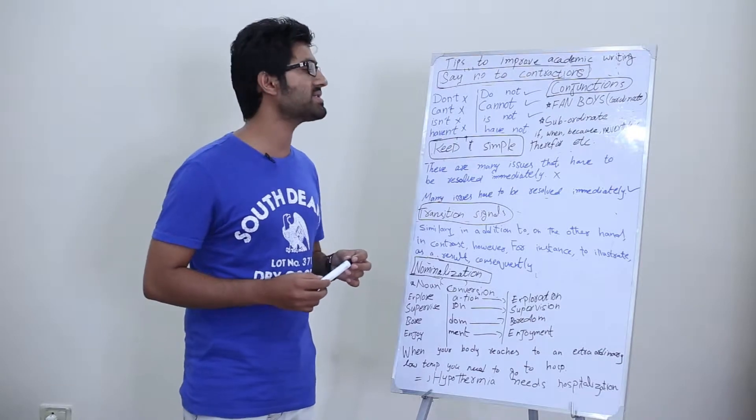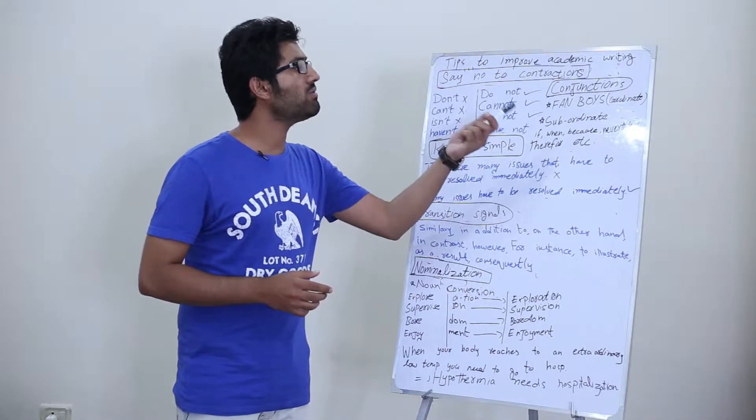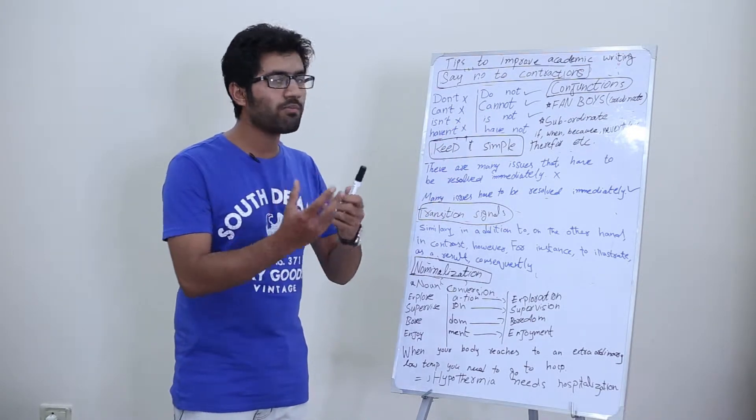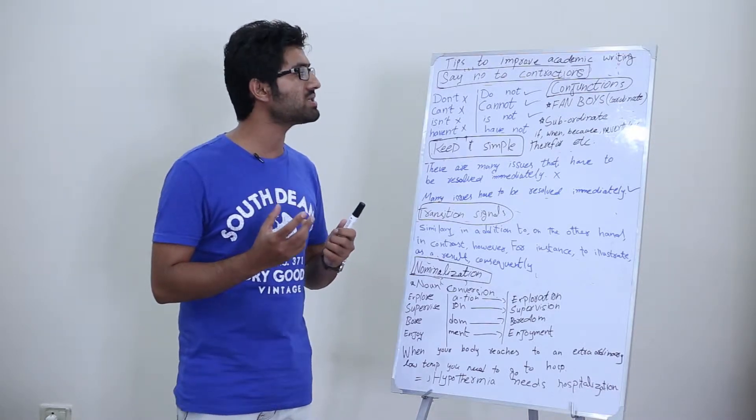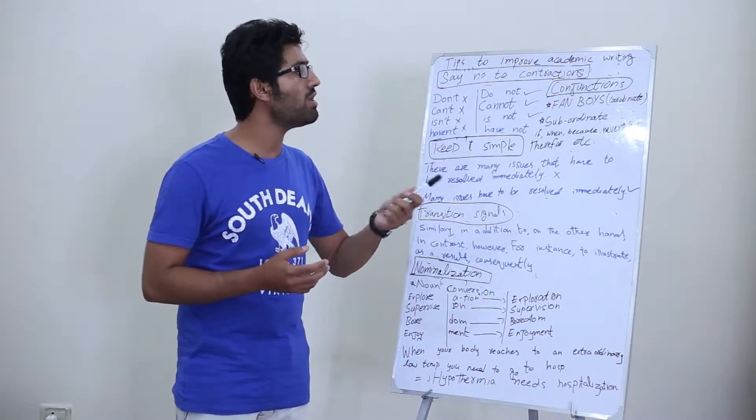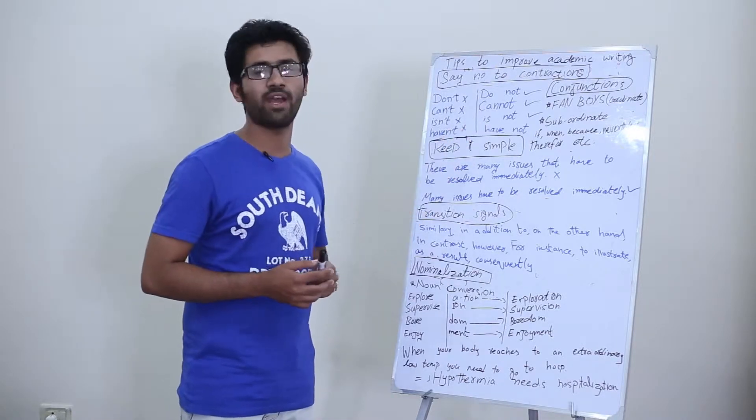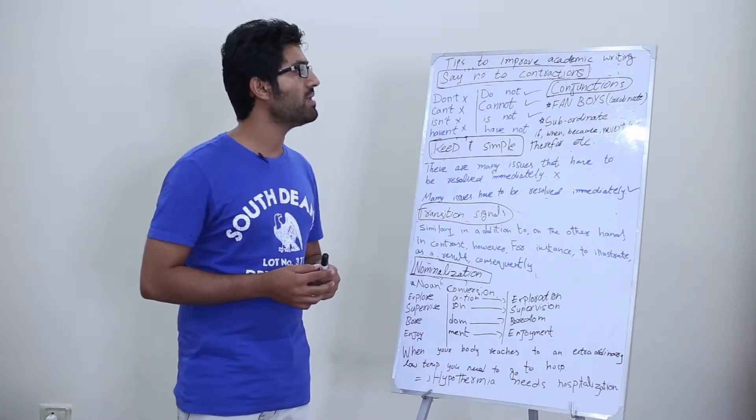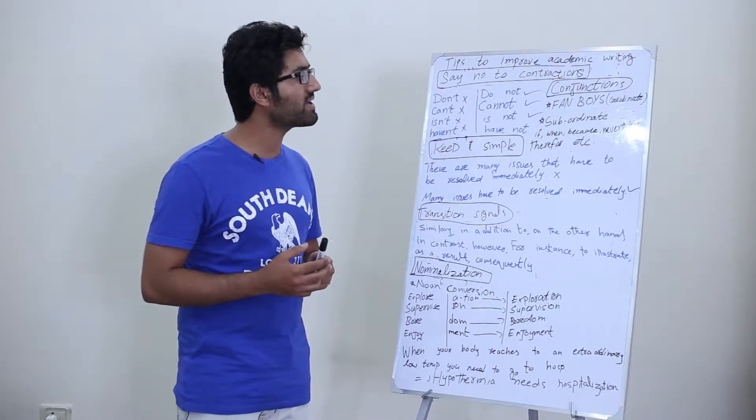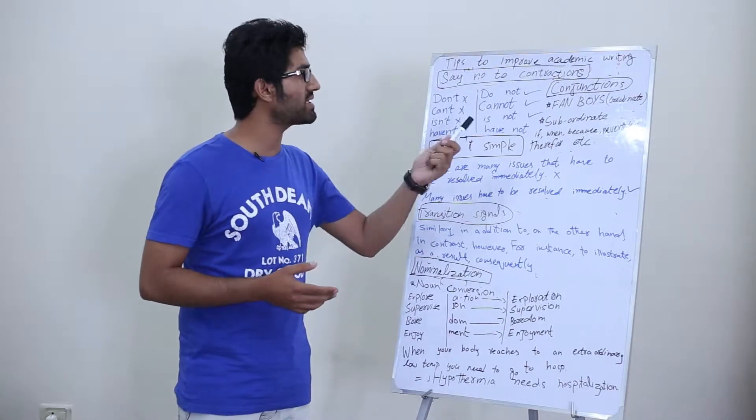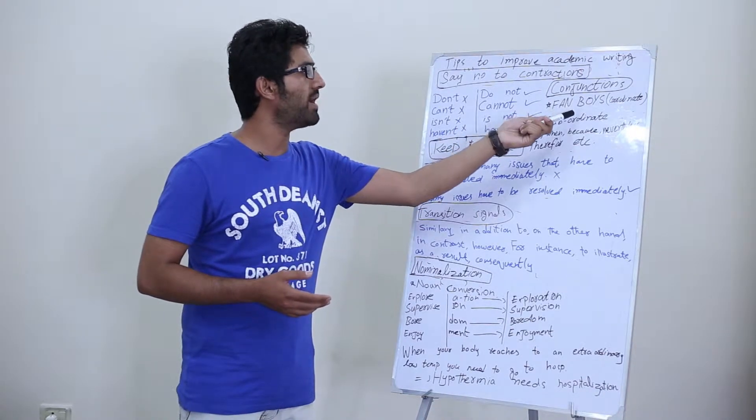Coordinate conjunctions are the type of conjunctions in which both clauses are of equal rank, and you should know how to use them. What is meant by FANBOYS? It is an acronym to remember the coordinate conjunctions. For example: for, and, nor, but, or, yet, so.